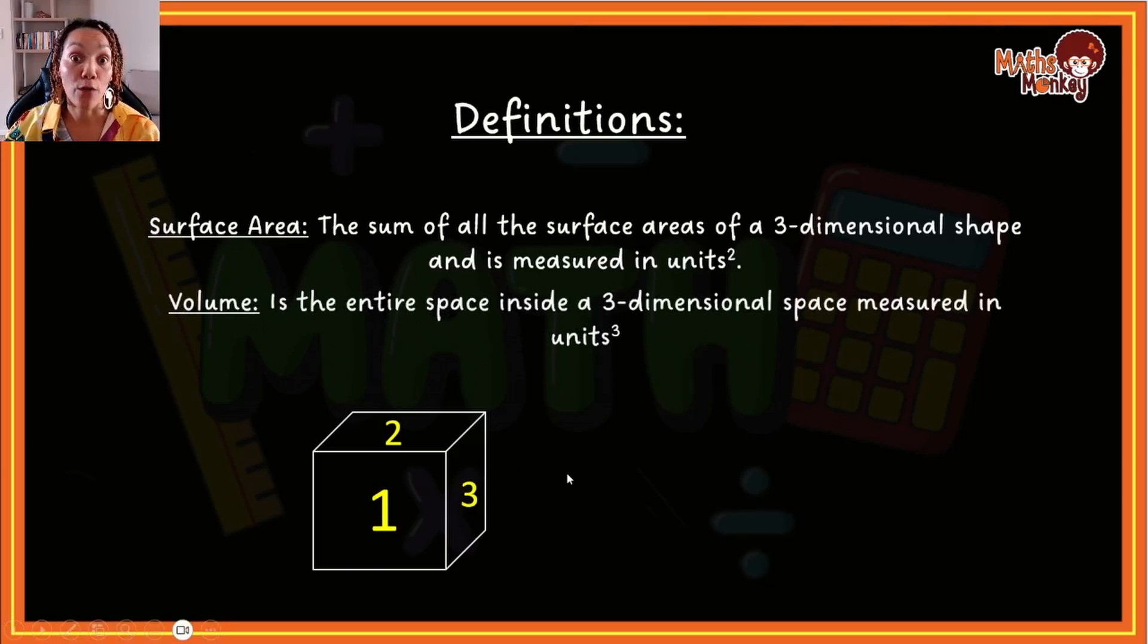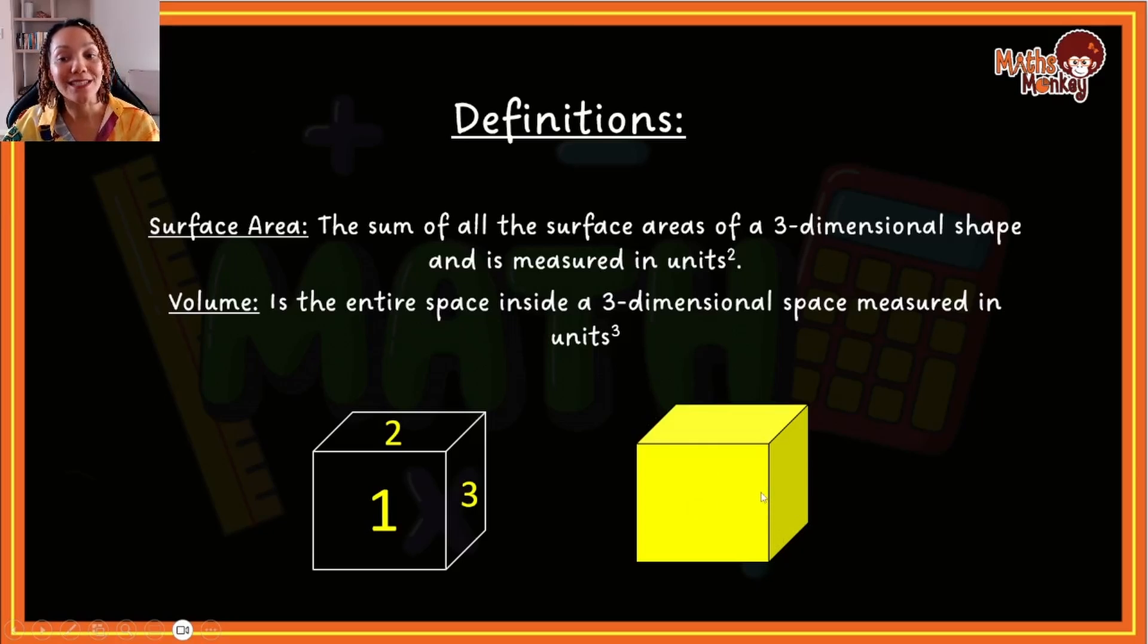If we talk about volume now, volume is not just the surfaces. Volume is the entire space inside a three-dimensional shape. So if I were to show you here, this is the yellow, it's literally everything inside this shape. So surface area, we're just calculating the area of all the surfaces and adding them together, where the volume is interested in all the space that's inside a three-dimensional shape. Okay. So that's essentially the concepts that you must understand.